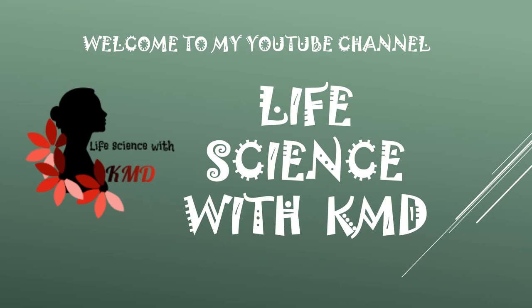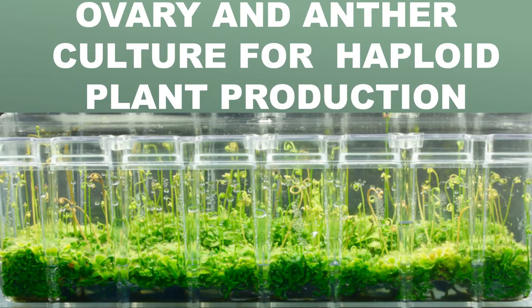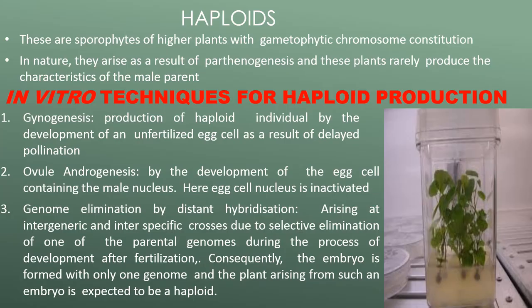Welcome to Life Science with KMD. Today I'm going to explain about ovary and anther culture for haploid plant production. Haploids are sporophytes of higher plants with gametophytic chromosome constitution. In nature, they arise as a result of parthenogenesis, and these plants rarely produce characteristics of a male parent.